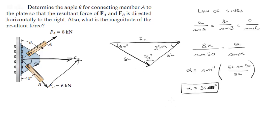Simple. And now if you want to find the magnitude, which will be C, the magnitude of the resultant force is very easy. All you got to do is 8k sine of 50 is equal to